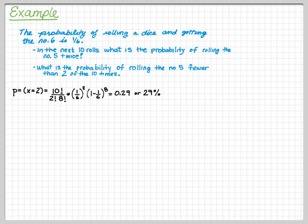To solve this, we say the probability of x equaling 2 is 10 factorial divided by 2 factorial divided by 8 factorial times 1 sixth squared times 5 sixth to the eighth power, and this is 29%.